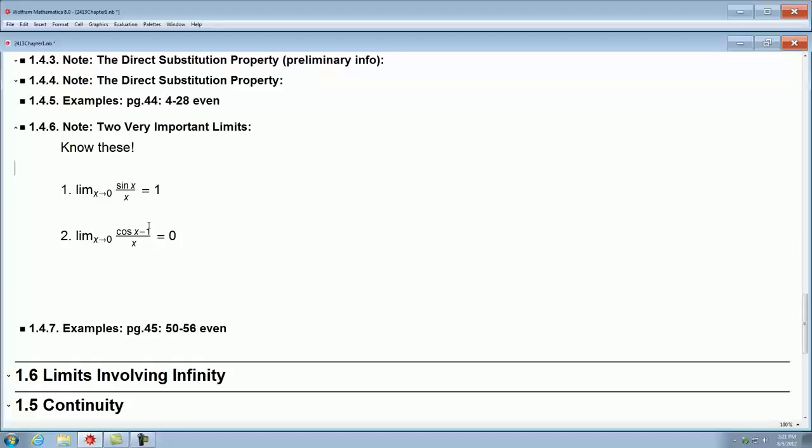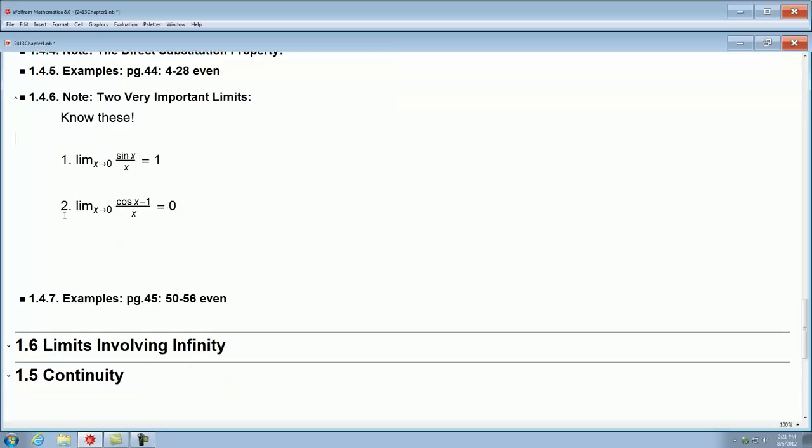This one, we didn't look at a graph, but let's just look at what's happening here. As x approaches zero, cosine of zero is one. One minus one is zero. And on the bottom, we're plugging in zero. So you get zero over zero again, it's undefined. But as you get closer to it, you get zero. So I will show you these in class. I'll try and explain why these are true. And then in class, I will do these examples from page 45.